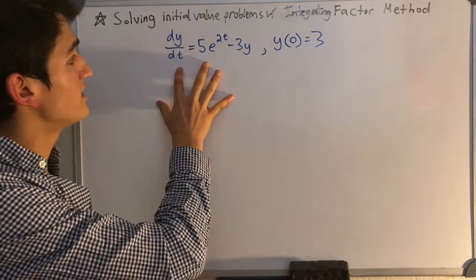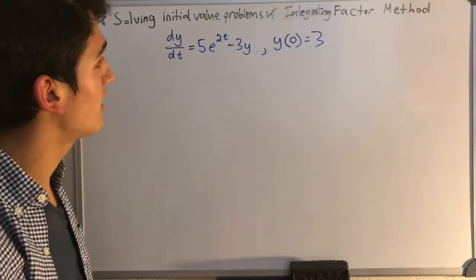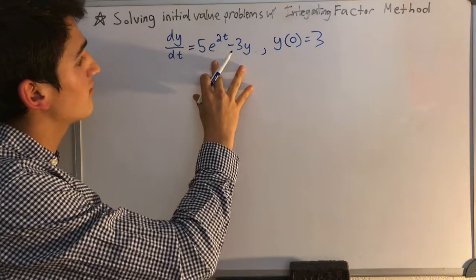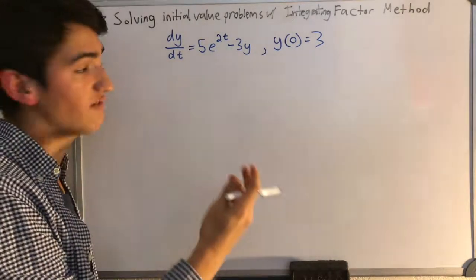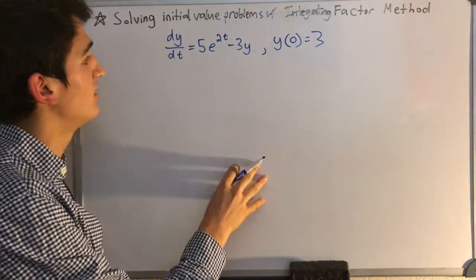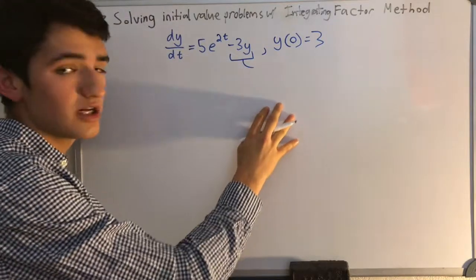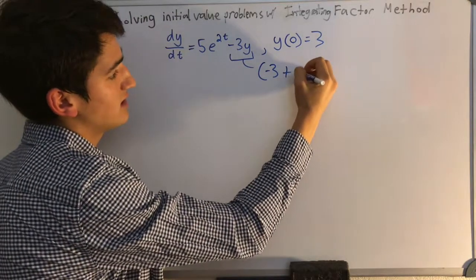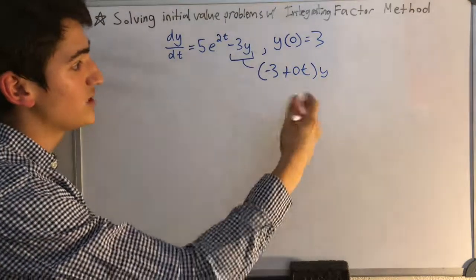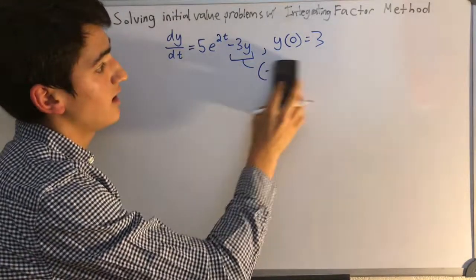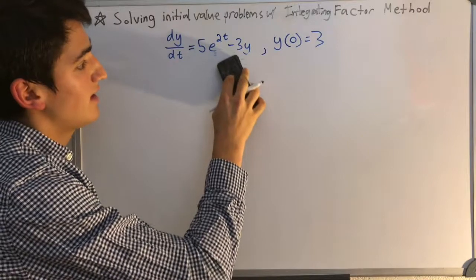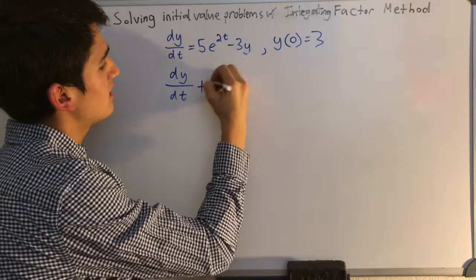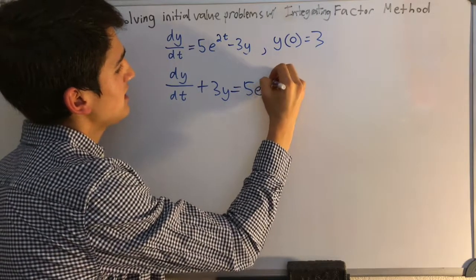Now we've got our differential equation as well as our initial value, so we'll go ahead and solve this problem with the integrating factor method. First, we just have to get it in the form of dy/dt plus some function of t times y equals another function of t. This negative 3y might not necessarily look like a function of t times y, but it is — it's the exact same as negative 3 plus 0t times y. So we'll subtract that over, and we've got dy/dt plus 3y equals 5 times e to the 2t.